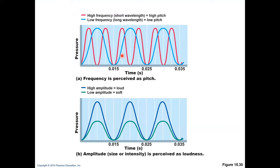We can compare high frequency and low frequency: high frequency gives you high pitch and low frequency gives you low pitch. Shown in red is high frequency — more waves occur in the same time period. Low frequency has fewer waves in that period. Loudness relates to amplitude: higher amplitude means a louder sound, lower amplitude means a softer sound.